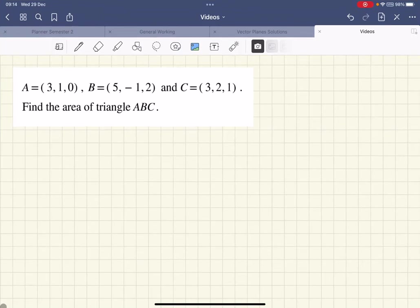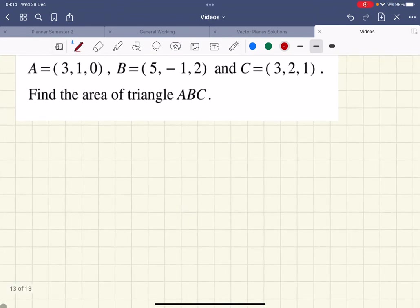We want to use the cross product to find the area of a triangle. We've got a formula that will work for this, and it's simply that it's half